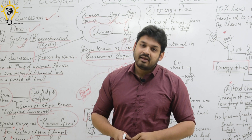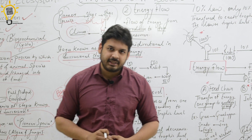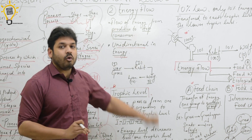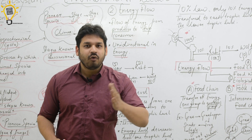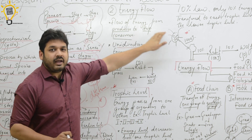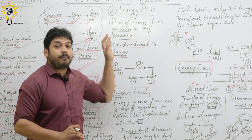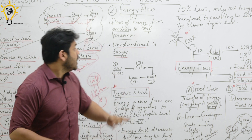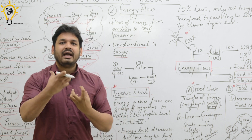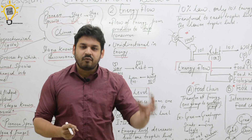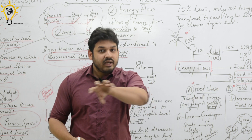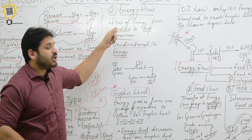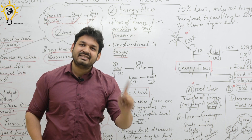That is the first function of ecosystem — ecological succession. Now let's move to our second function, which is very important: energy flow. Energy flow means the flow of energy from producer to top consumer. Remember from the previous video: producers are plants, then consumers — for example, plants → rabbits → wolf → tiger. This transfer is called energy flow.